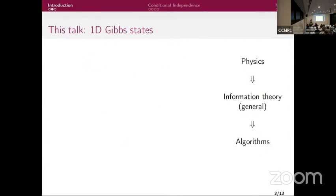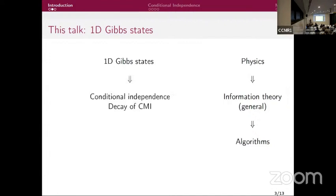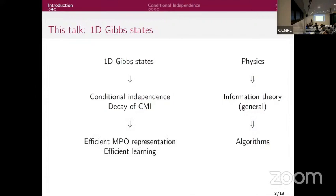In this talk we focus on 1D Gibbs states. I want a similar story, and that's not how it has been proven before. For 1D Gibbs states, tensor network representations have been found via explicit constructions. Part of the motivation of this work was: can we still reproduce this story? Can we start from 1D Gibbs states, find some information-theoretic criterion — spoiler: something with conditional independence — and use it to get an efficient MPO representation?